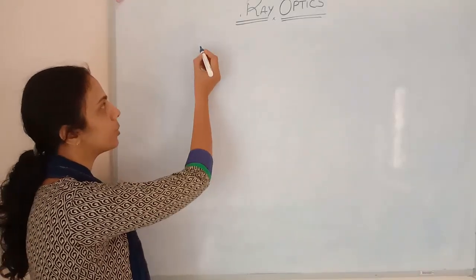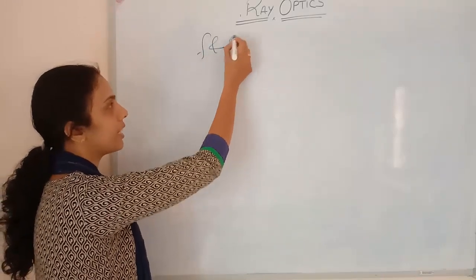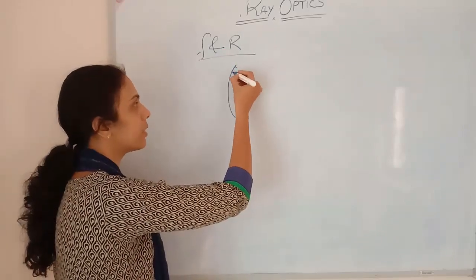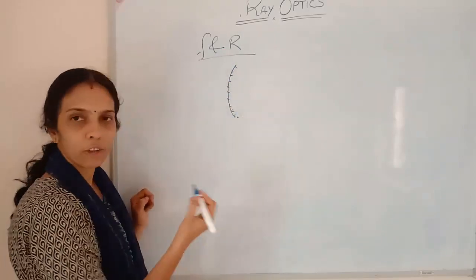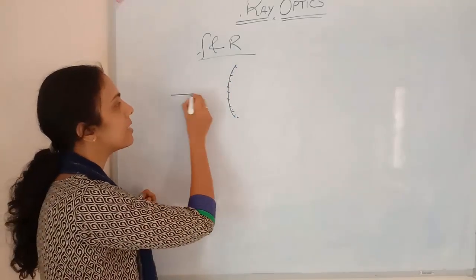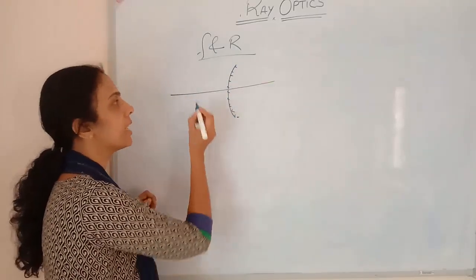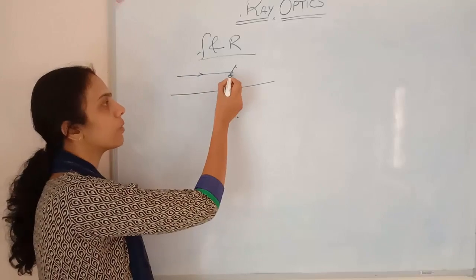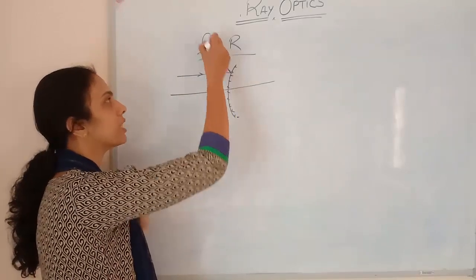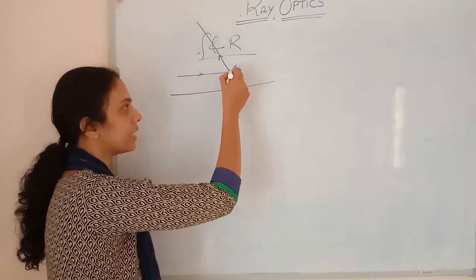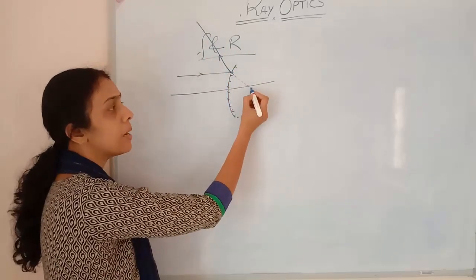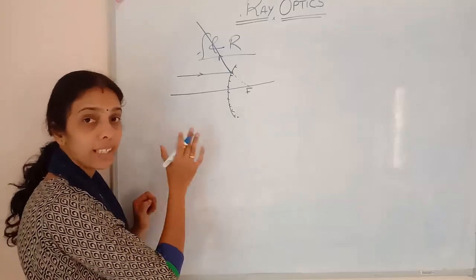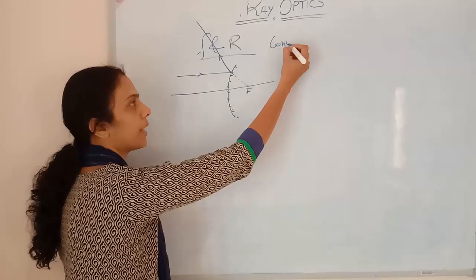See, I'll help you do that. We are going to find out the relation between f and r in the case of a convex mirror. For a concave mirror we did this in the last class. Here, this is the principal axis, and if a ray of light is incident parallel to the principal axis, it will diverge. The divergent ray, if extended, will meet at the principal focus. That is for a convex mirror.